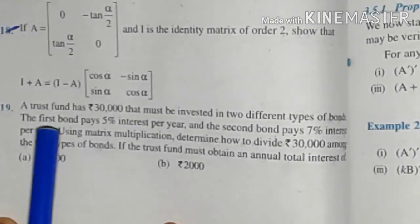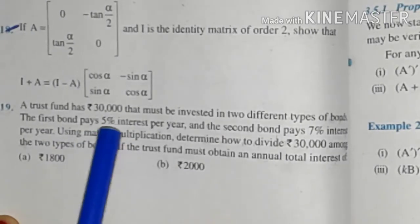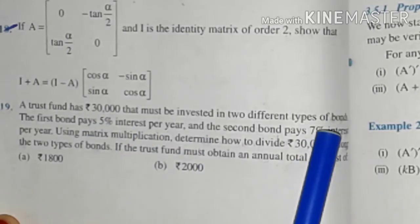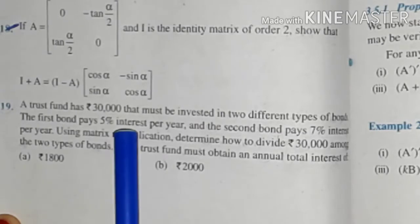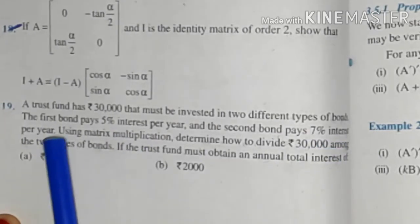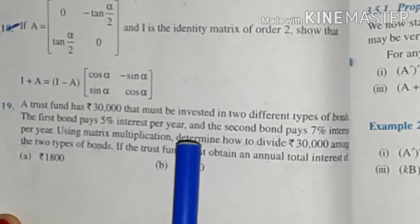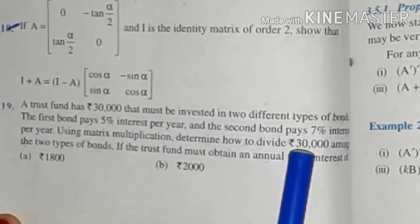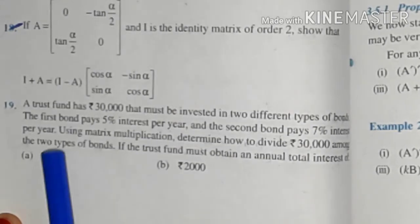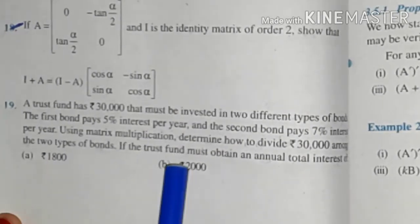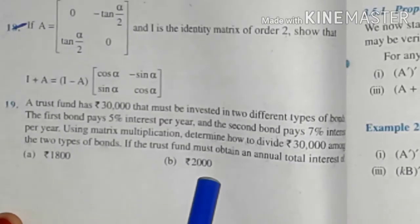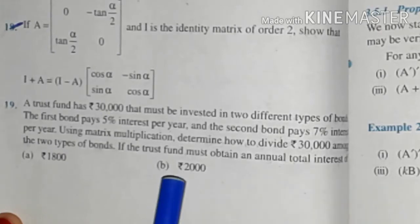Let's read the 19th question. A trust fund has 30,000 rupees that must be invested in two different types of bonds. The first bond pays 5% interest per year while the second bond pays 7% interest per year. We have to use matrix multiplication to determine how to divide this 30,000 amongst the two types of bonds. In part one the trust must obtain an annual interest of 1800, and in part two we must get an annual interest of 2000.